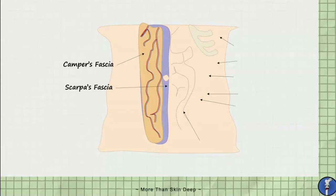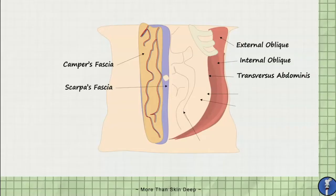Deep to the Scarpa's fascia are the muscular layers of the anterior abdominal wall. This includes the external oblique, internal oblique, and transversus abdominis. Deep to the transversus abdominis is the transversalis fascia, followed by the extraperitoneal fascia.